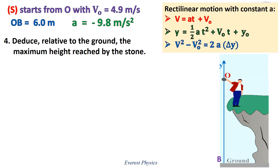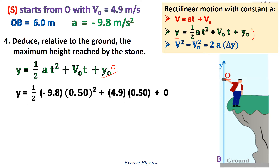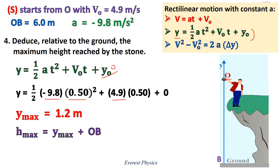Number 4: Calculate the maximum height reached by the stone relative to the ground. We have to use the second equation. Y represents the ordinate of the stone relative to the origin O. So Y equals ½at² + V₀t + Y₀. The stone starts from the origin O, so Y₀ equals 0. Replace each physical quantity: A equals minus 9.8, at the maximum height T equals 0.5 seconds, and V₀ equals 4.9. Therefore the maximum ordinate of the stone relative to origin O equals 1.2 meters. The maximum height relative to the ground is Y_max plus OB. Therefore H_max equals 8.2 meters.